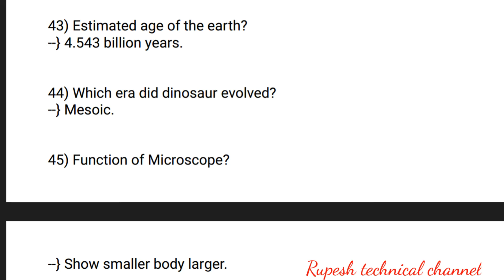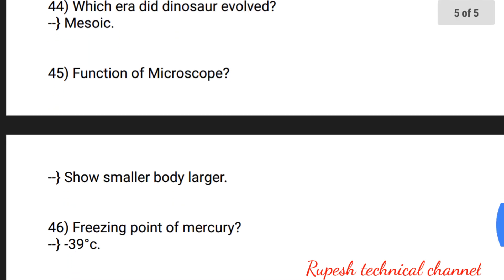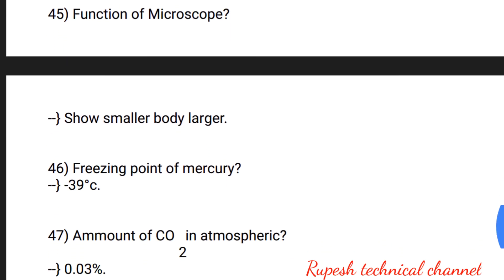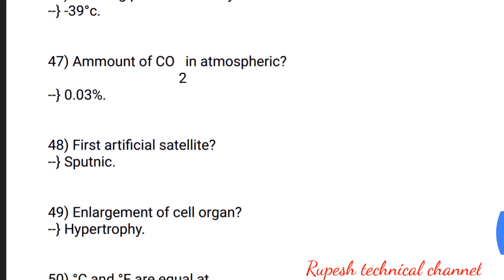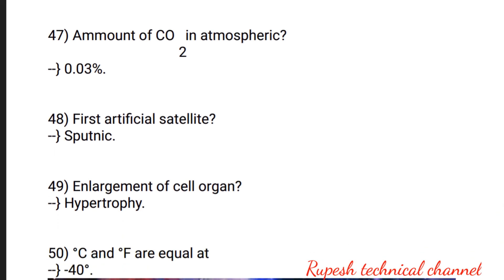Question number 42: function of cerebellum — memory. Question number 43: estimated age of the Earth — 4.5 billion years. Question number 44: which era did dinosaurs live in? Question number 45: function of a microscope — to show smaller bodies larger. Question number 46: freezing point of mercury — minus 39 degrees Celsius.